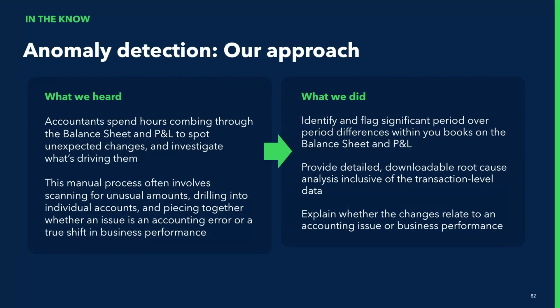Next, let's take a look at anomaly detection. You've told us that reviewing the P&L and balance sheet for errors, especially on a deadline, is a very manual and stressful process. So we built a tool that flags significant period-over-period changes and gives you a downloadable root cause analysis at the transaction level. You can make changes on individual transactions from there.